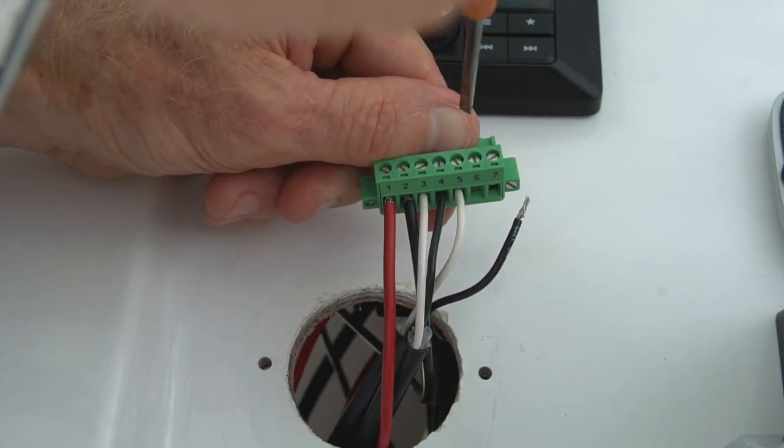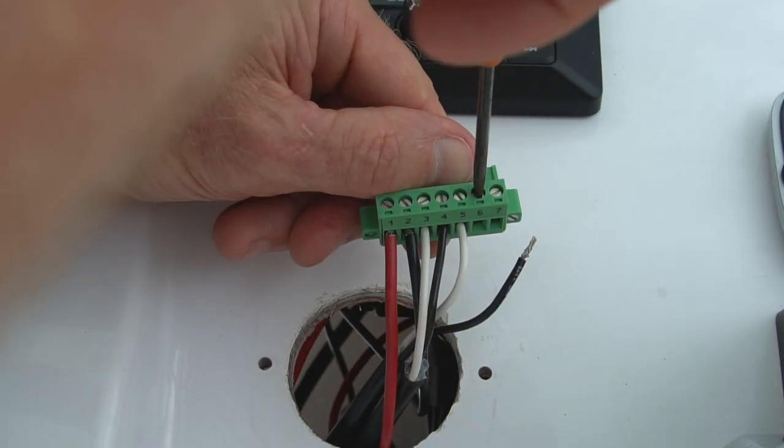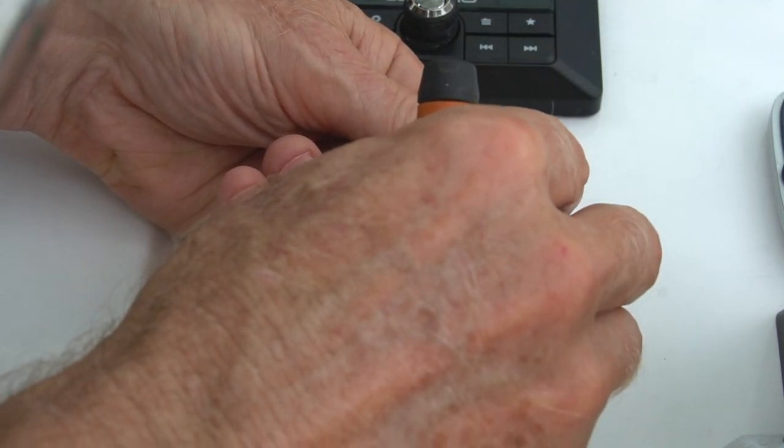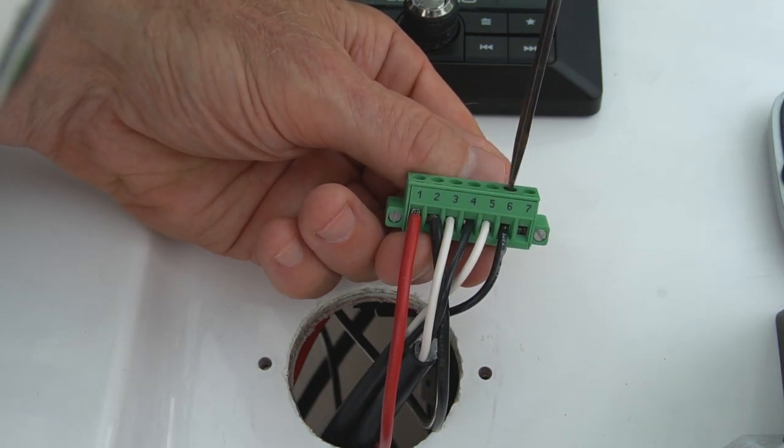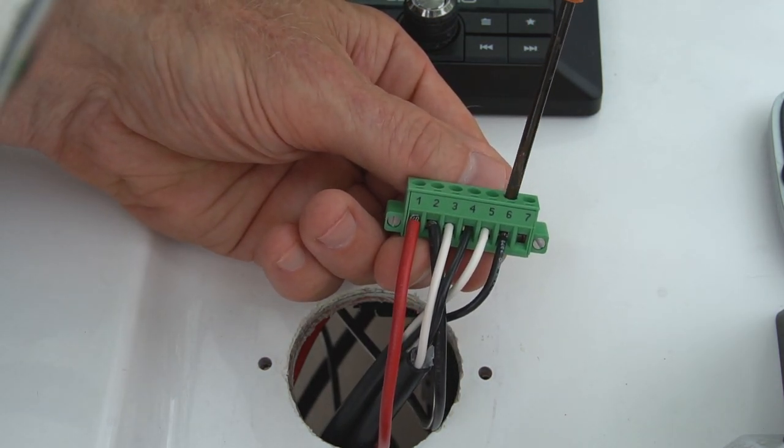These are screw terminals, so you use a small flat screwdriver to tighten down on the wire after you insert it in the corresponding terminal space. Snug it up until it's tight and then give it the old pull test to make sure it won't slip out.